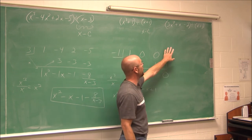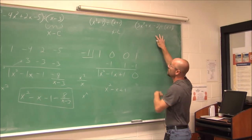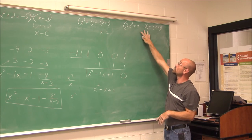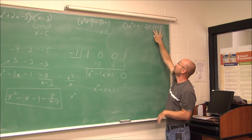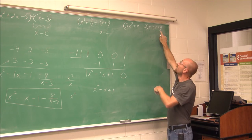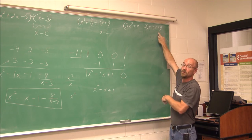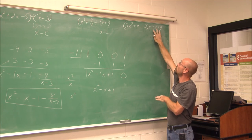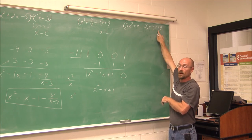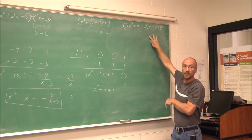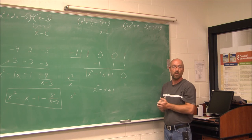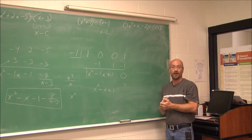I want you to attempt synthetic division using 3x squared plus x minus 2 divided by x plus 1. Just like we had x plus 1 in the last example, what is your c value? Remember: when you see it in this form — x and a number — always take the opposite of that number. Try this one for yourself. This has been section 11.7, which incorporates 7.6a. Thank you for watching — we'll see you soon.